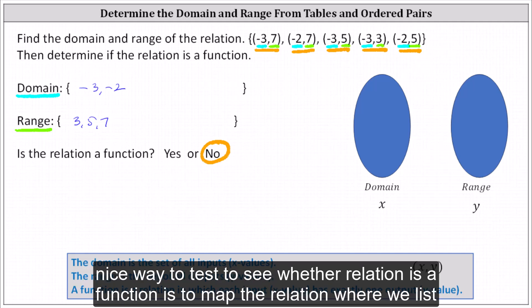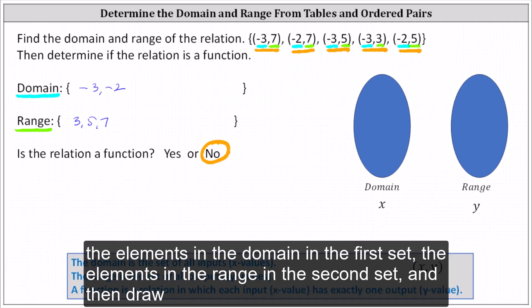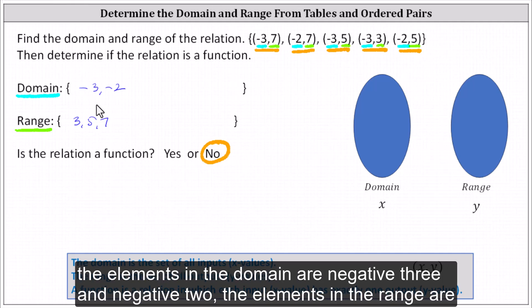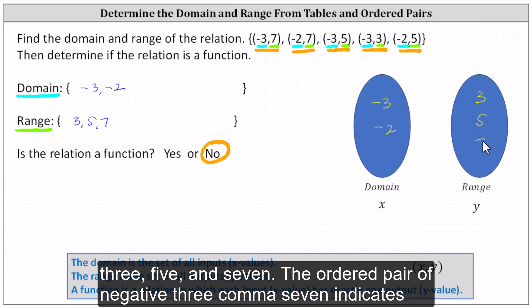Another nice way to test whether a relation is a function is to map the relation, where we list the elements in the domain in the first set, the elements in the range in the second set, and then draw an arrow to represent each ordered pair. The elements in the domain are negative three and negative two, and the elements in the range are three, five, and seven.